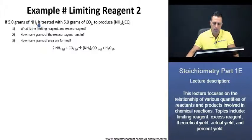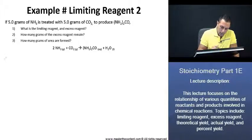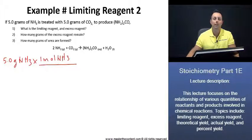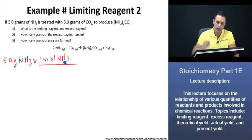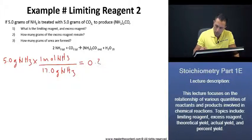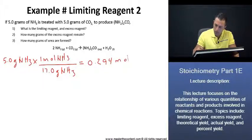Let's begin with ammonia. If we have 5 grams of ammonia, we know that the molar mass for ammonia — rounded to 1 decimal place, which you can get directly from the periodic table — is going to be 14 for the nitrogen and 3 for the hydrogen, giving us 17 grams per mole. Should you require more information on how to find molar mass, we covered that earlier in this lecture series. Once we equate the following, we end up with 0.294 moles of ammonia.